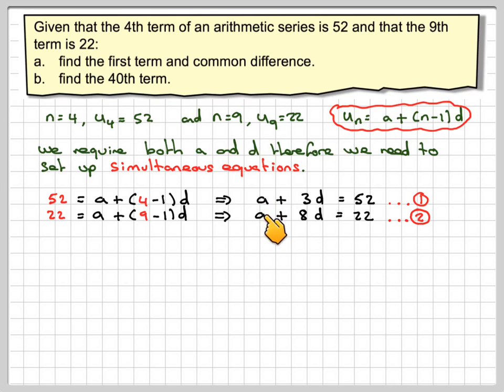To eliminate the a's, we need to subtract. So we subtract equation 1 minus equation 2. a minus a is nothing, so 3 - 8 gives me -5d, and then 52 - 22 is 30. Dividing that by -5, we get d = -6.